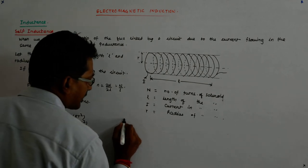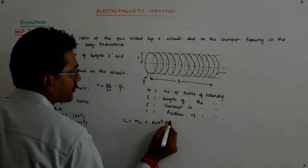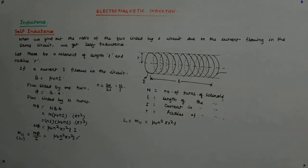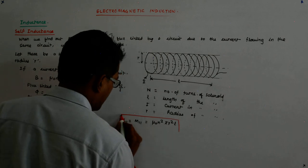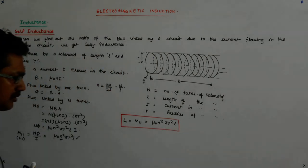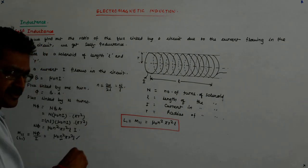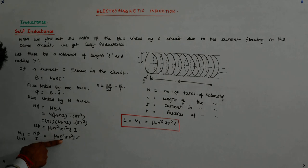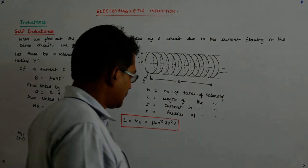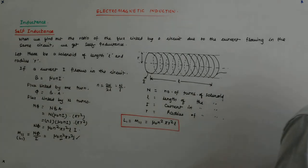So this is self-inductance. L₁ which is M₁₁ is μ₀n²πR²L. I said I doubled the number of turns, I doubled the length. So small n did not change. So there will be no contribution from here. The only contribution will be due to the increased length. You understand? The only contribution is due to the increased length and so it will become only double.